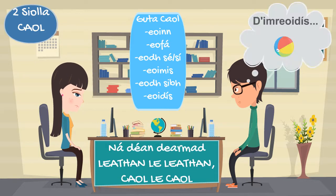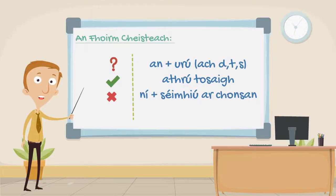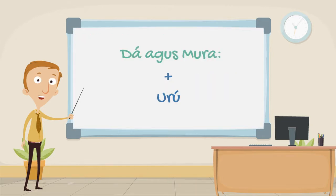And now, all that's left to do is to ask and answer questions in the Módhcoinníollach. To ask a question, we simply use an followed by an urú, but not on D, T, or S. To answer a question positively, we use the standard athrú tosaigh. And to answer negatively, we use ní followed by a séimhiú on a consanant. The word for 'if' in the Módhcoinníollach is dá — D-I-A-father. This word is always followed by an urú. And the word for 'if not' is mura, also followed by an urú.